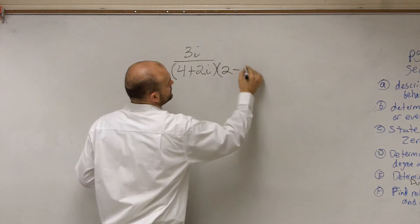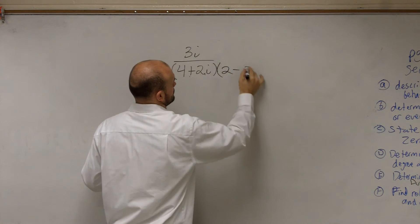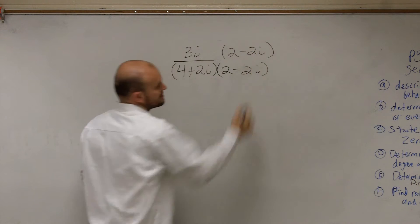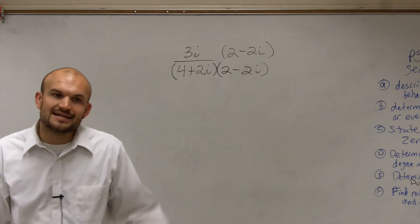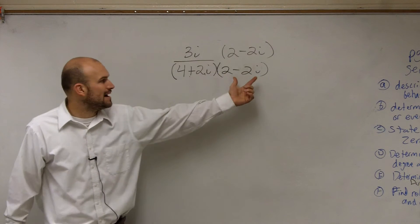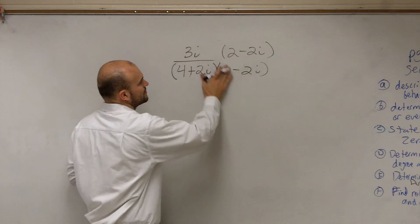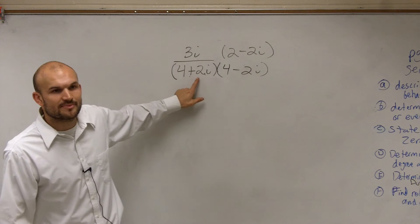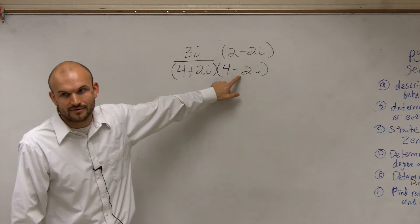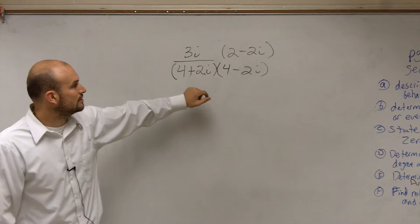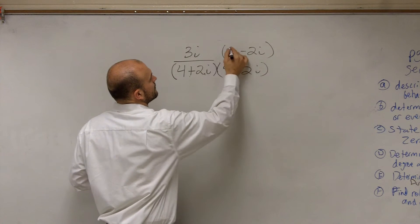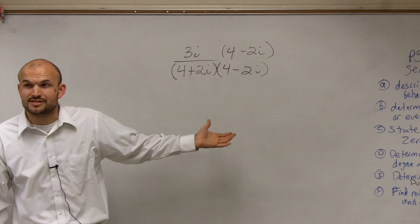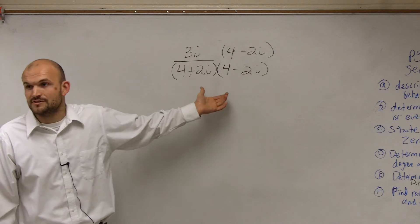What we can do is multiply by what we call the conjugate. The conjugate is the exact same binomial, except if this one is positive, this one is negative. Now let's go ahead and multiply this. We notice this is what we call a difference of two squares — we have the same numbers, one being positive and one being negative.